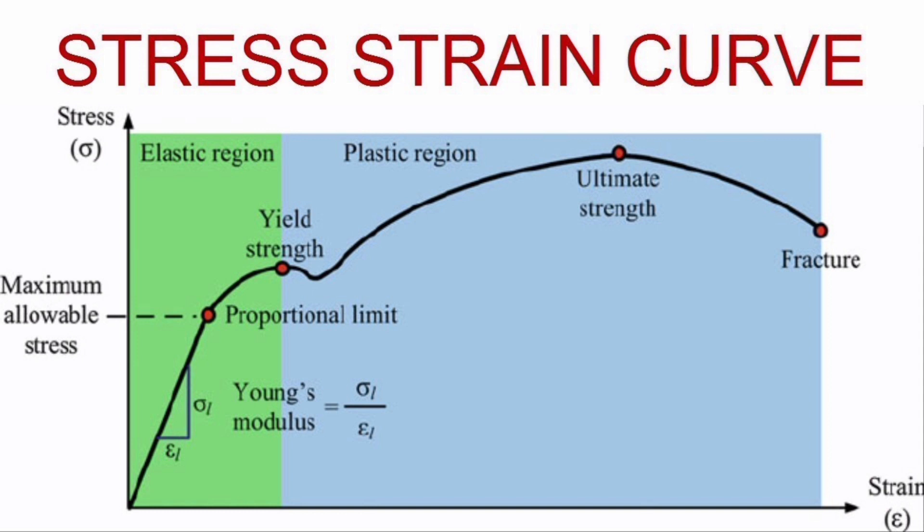Strain hardening occurs due to rearrangement of the metal crystals. They intermingle with each other and form a stronger structure. This happens during the beginning of plastic deformation. Necking is when, between the ultimate tensile strength and fracture, stress reduces as the strain increases.